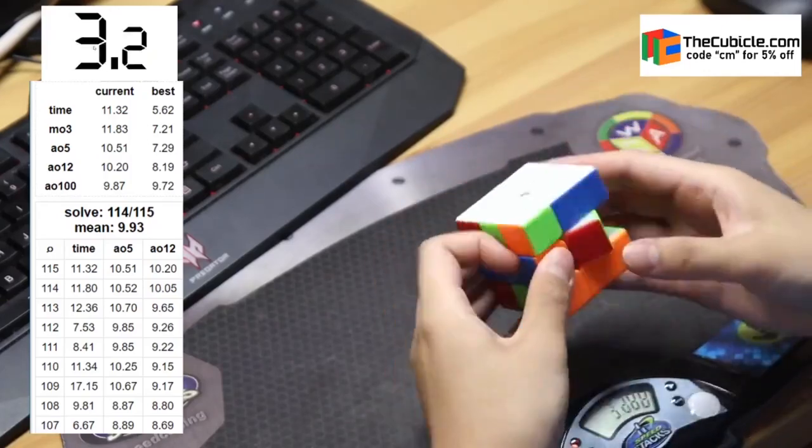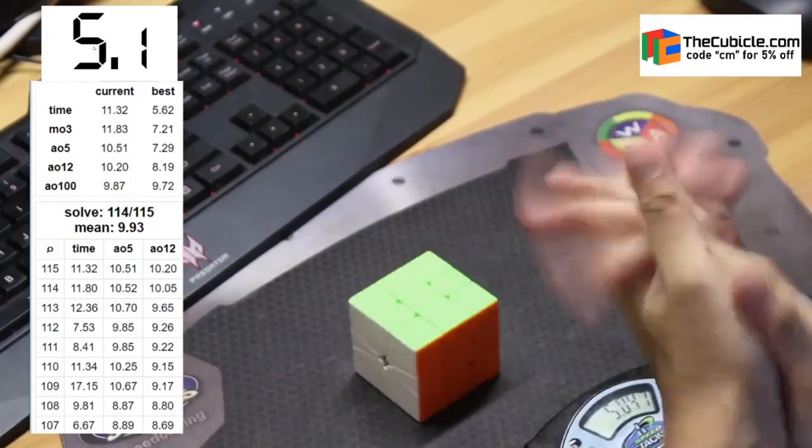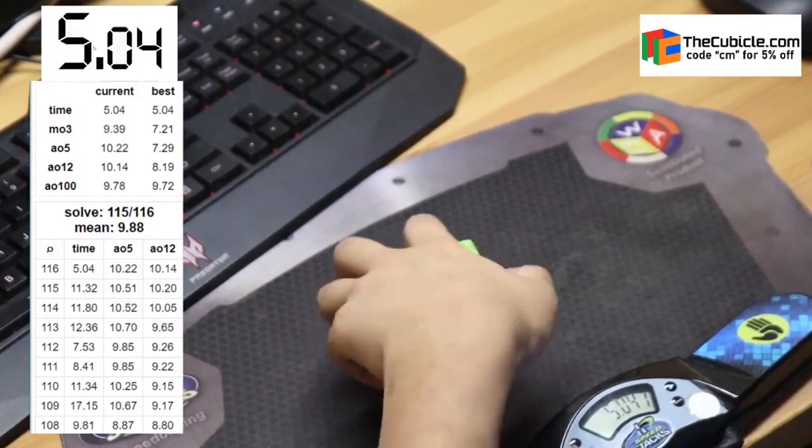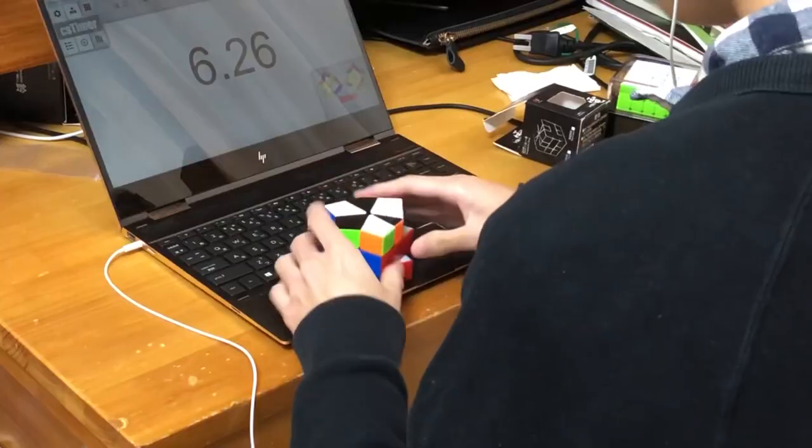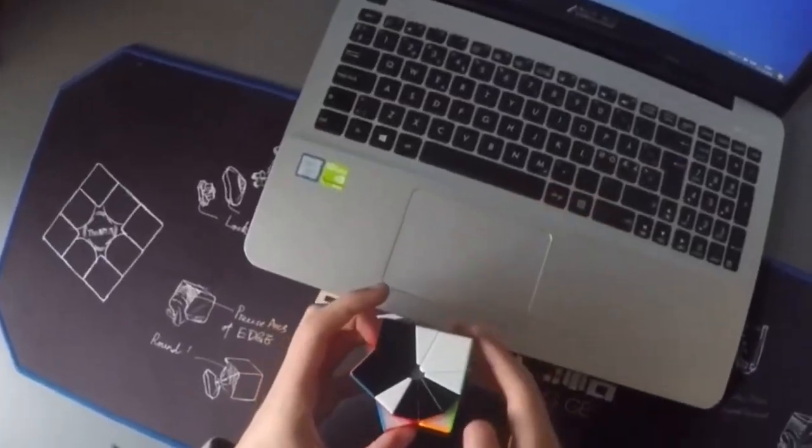In this video, I'll be analyzing some Square-1 solves from the top five Square-1 solvers in the world. I'm going to base this off average, and I'll be analyzing Aiden, Makoto, Mikau, Rasmus, and Vincenzo.